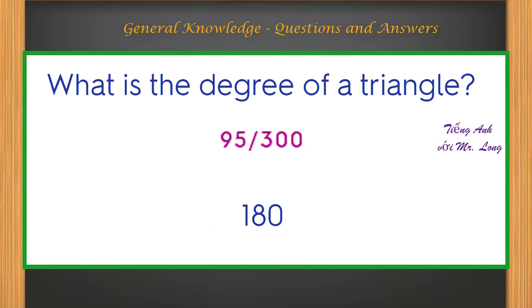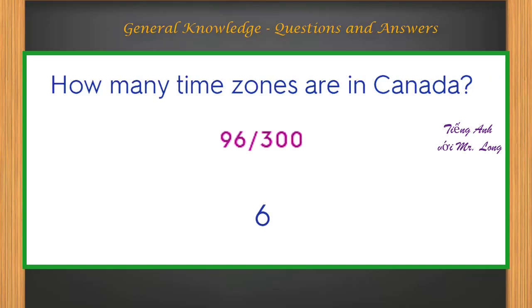What is the degree of a triangle? 180. How many time zones are in Canada? Six.